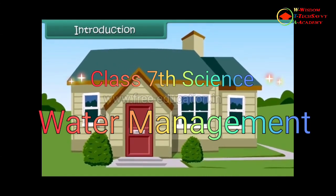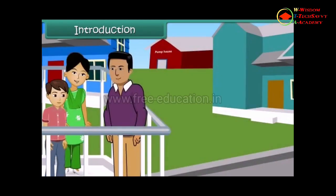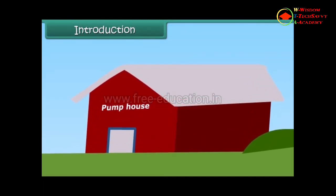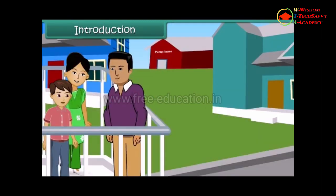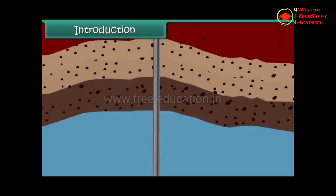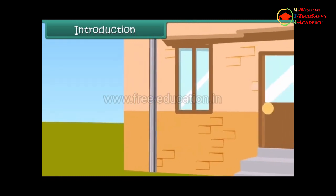Piyush has shifted to a new house. He gets up in the morning and joins his parents in the balcony. In the morning calm, he hears a distinct sound that seems to be coming from the pump house. He asks his father what the noise is. His father tells Piyush that the pump house is pumping out water from below the ground so that it can be supplied to all the houses in the locality.